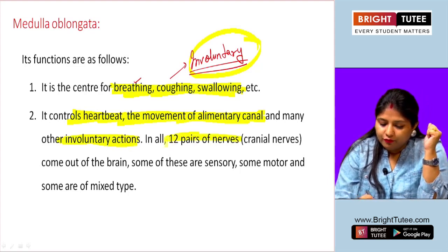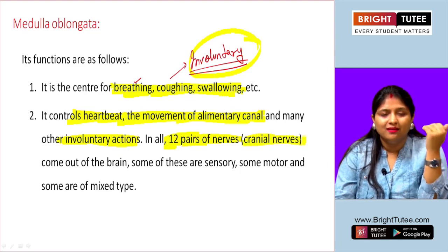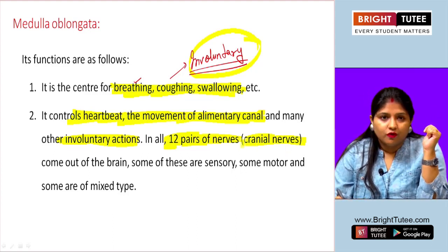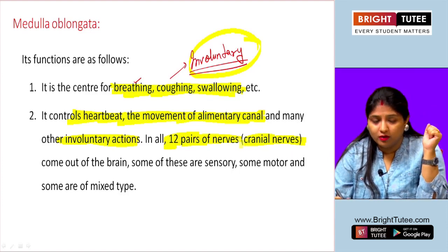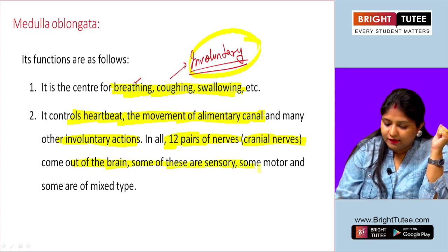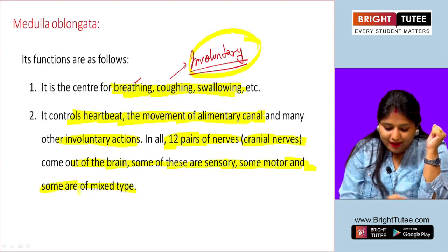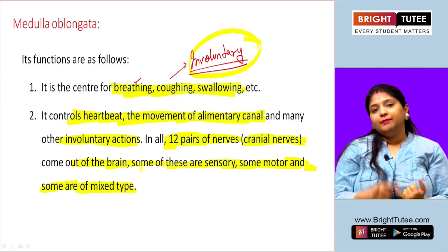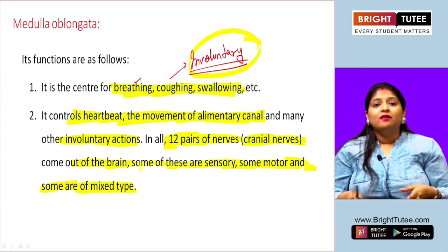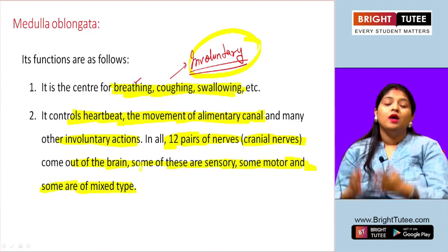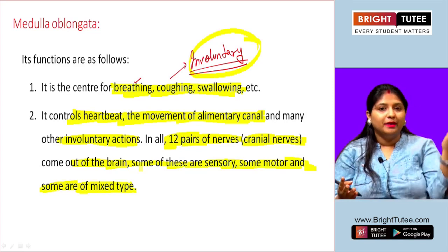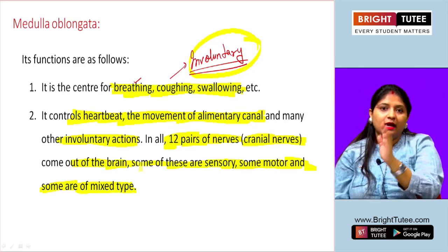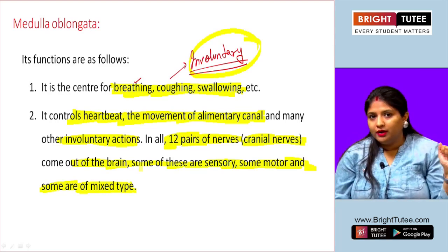In all, 12 pairs of cranial nerves — 24 nerves total — come out of the brain. Some are sensory, some are motor, and some are of the mixed type. These nerves come out along with the medulla oblongata and connect to the spinal cord. So the medulla oblongata not only functions as the center for involuntary functions but also acts as a connecting link — a bridge — between the brain and the spinal cord.